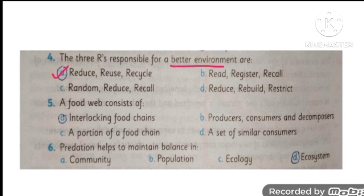MCQ number five: a food web consists of interlocking food chains. MCQ number six: predation helps to maintain the balance in an ecosystem.